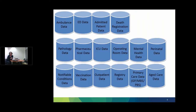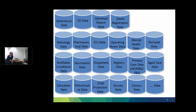Outside of hospital events, there are other isolated data collections — notifiable conditions, vaccinations, outpatient services, registry information such as cancer registries, stroke registries and trauma. There's also primary care information sitting outside the state's jurisdiction, relating to GP visits, MBS and PBS, and things like aged care data. You can extend further to education, police and justice, child protection, surveys about health-related issues, census data, and so on. There's a lot of information out there that, if joined together, could be quite useful, but it's just sitting in a lot of silos.